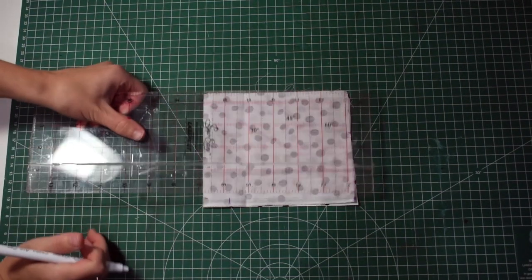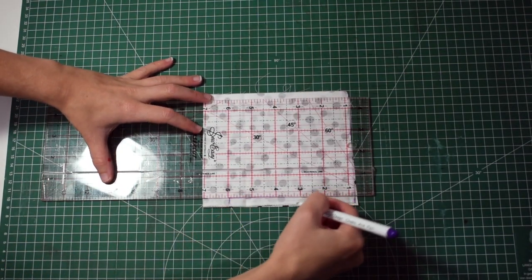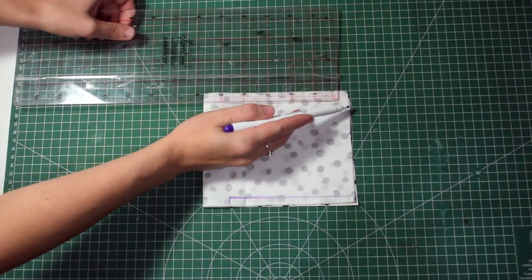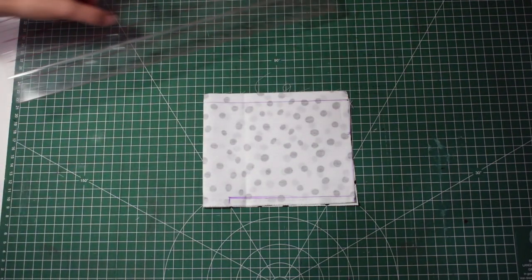We're going to give ourselves a quarter inch seam allowance. So mark from the inch up straight to the top and that's where we're going to sew. And then the other side we're going to do a quarter inch seam allowance and measure all the way down to the bottom.